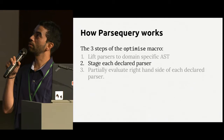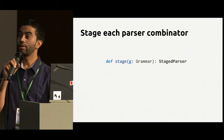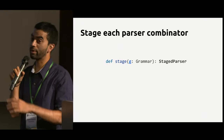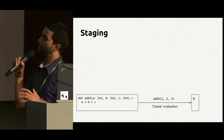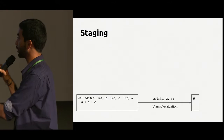The fun stuff: we call this method stage, and it takes a grammar and gives you back a staged parser. A parser in user land versus a staged parser in the macro world. Before going through that, let's see what staging actually means. Consider a very simple example of a function that takes three integers and adds them — add three with one, two, three expectedly gives you six.